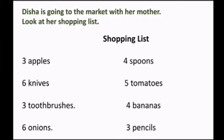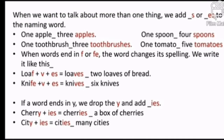Disha is going to the market with her mother. Let's see what she bought: 3 apples, 4 spoons, 6 knives, 5 tomatoes, 3 toothbrushes, 4 bananas, 6 onions, and 3 pencils. When we want to talk about more than one thing, we add S or ES to the naming word.